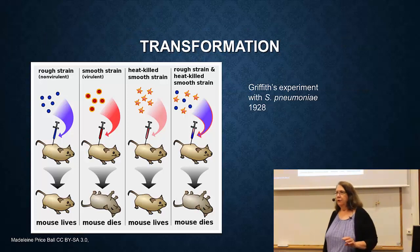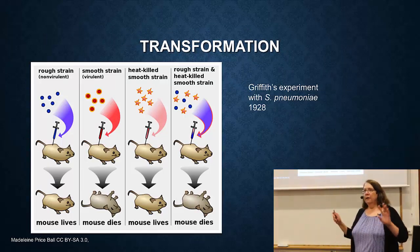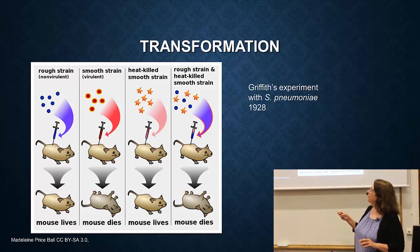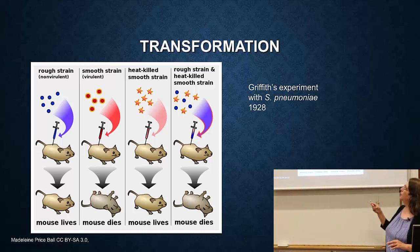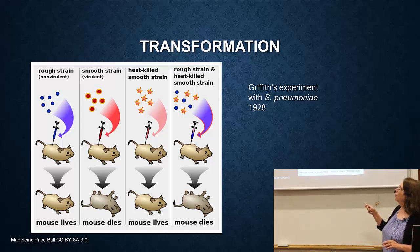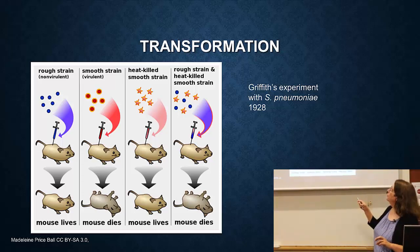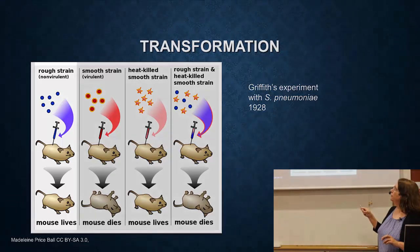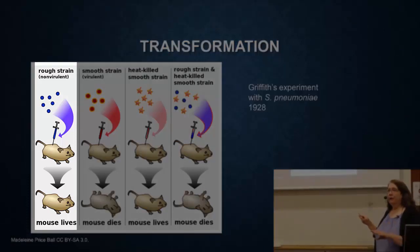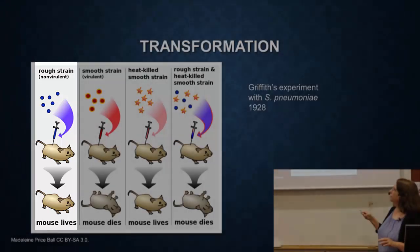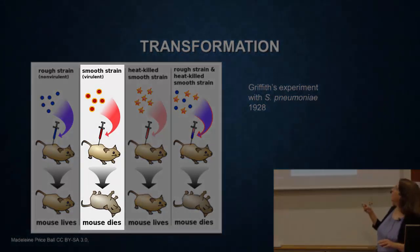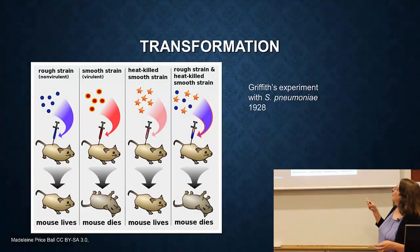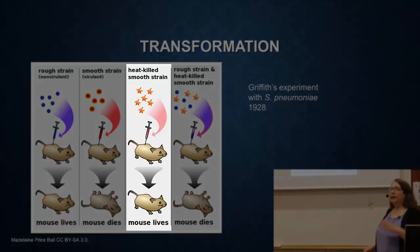The first way is something called transformation. To give some historical perspective: in an experiment in 1928, they had two strains of Streptococcus pneumoniae. One strain is called rough and one is called smooth. The rough strain does not cause disease — it's non-virulent. If you inject it into a mouse, the mouse is fine. If you take the smooth strain and inject it into a mouse, the mouse dies.